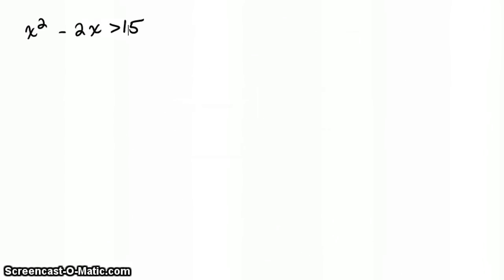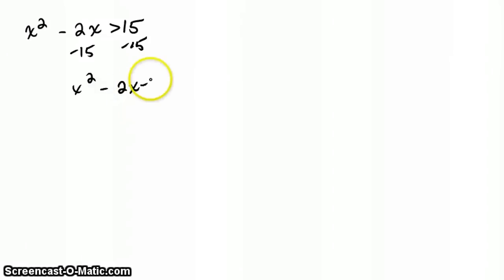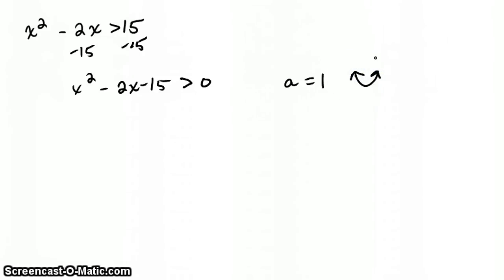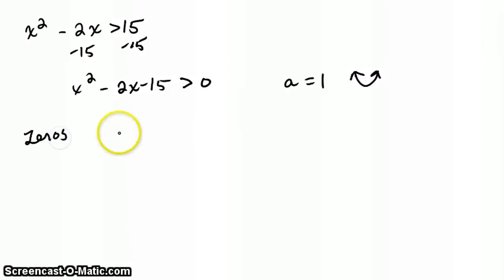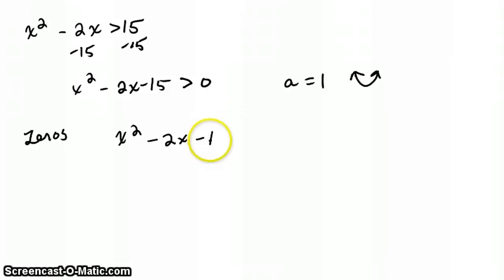Let's start by solving for x in this inequality: x squared minus 2x is greater than 15. We want to get everything to the left side, so we subtract 15 and get x squared minus 2x minus 15 is greater than 0. We want to determine our direction — a here is 1, so our direction is going to be up. Now we've got everything to one side and found our direction, so we're going to solve for our zeros. We take x squared minus 2x minus 15 and set it equal to 0.